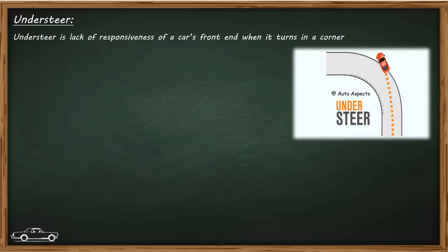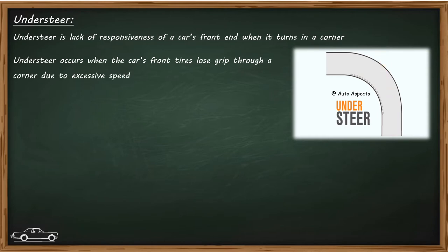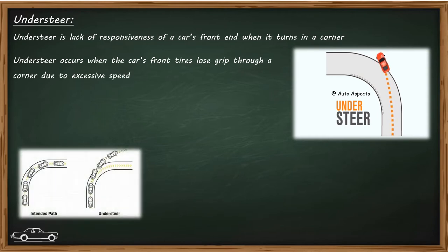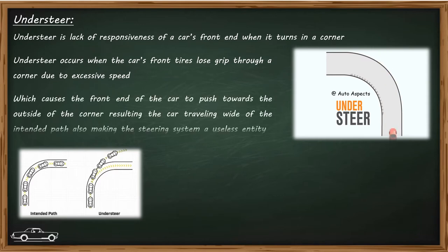As the front tire loses grip in cornering due to excessive speed, this leads to understeer condition, which pushes the front end of the car outside the corner, making the car travel a wider path than the actual intended path. In these situations, the steering system becomes completely useless.